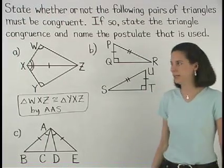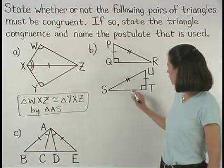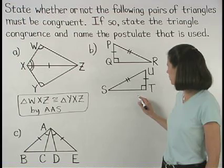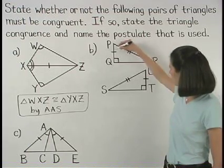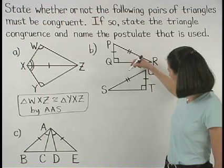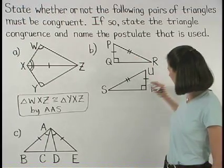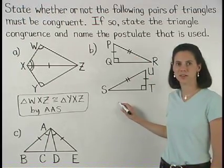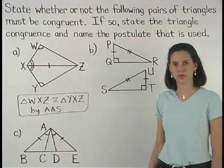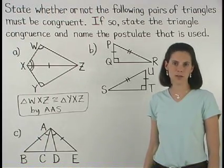In Part B, notice that we have a pair of right triangles, and the hypotenuse and leg of one triangle are congruent to the second triangle, so these triangles are congruent by hypotenuse leg.